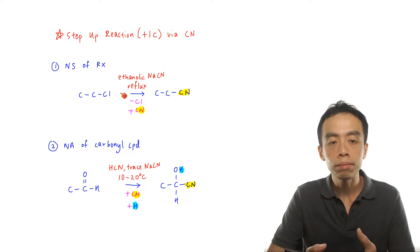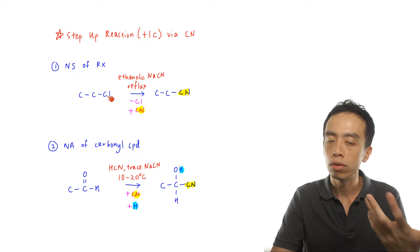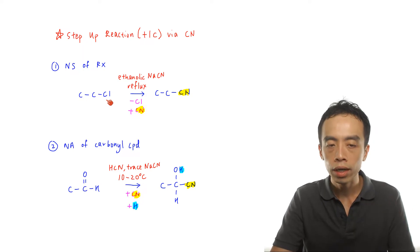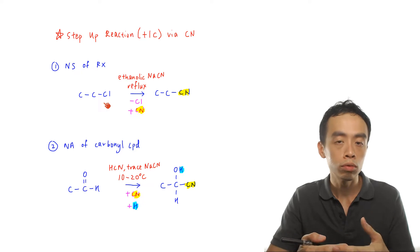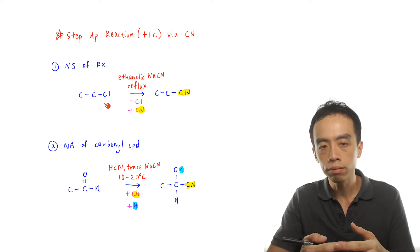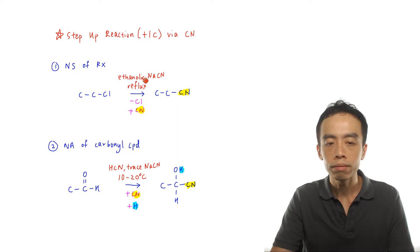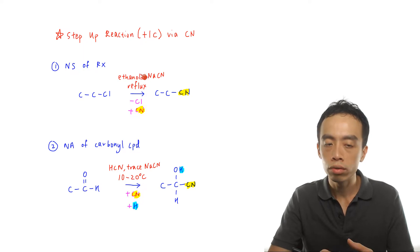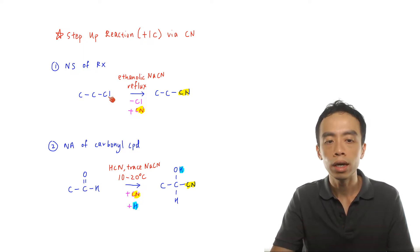If I have a chloroethane — a two-carbon compound with a Cl group — and I want to convert the Cl group to a nitrile, then what I will use is ethanolic NaCN, reflux. And what you notice is I am replacing the Cl group with a CN.